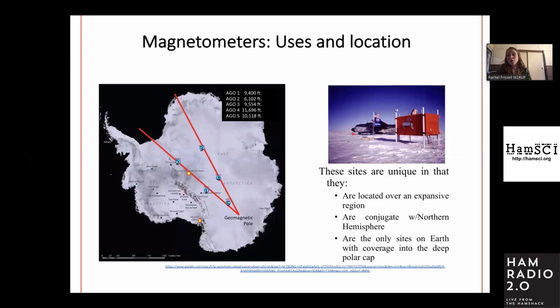The locations of these AGOs — here's a view from Antarctica — you can see AGO 5 is deep in the polar cap, and then AGO 5, 1, and 2 are along a similar line as AGO 5, 4, and 3.